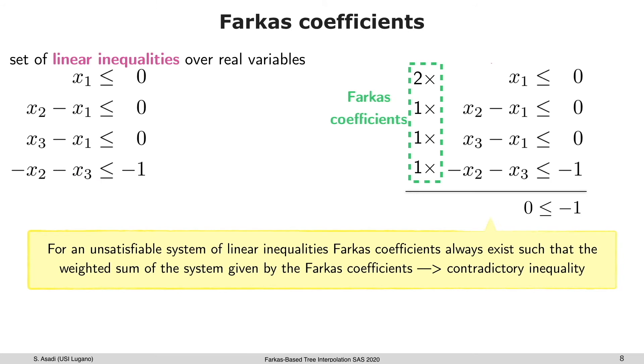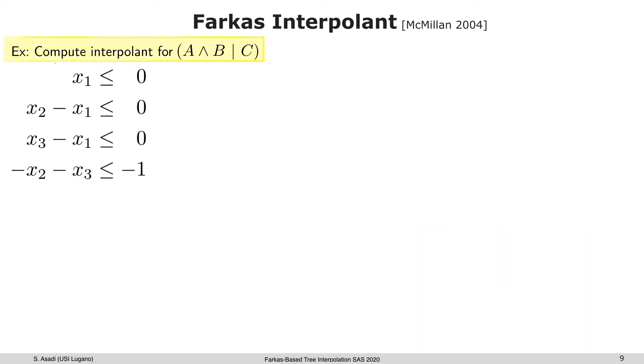Let's understand how Farkas coefficients could be useful. Consider this as an unsatisfiable conjunction of linear inequalities. For unsatisfiable systems, there always exist Farkas coefficients such that the weighted sum of the inequalities given by Farkas coefficients leads to a contradictory inequality. Now given this system and the interpolation problem, for instance A and B with C, I'm going to show how to compute interpolants in each interpolation algorithm one by one.